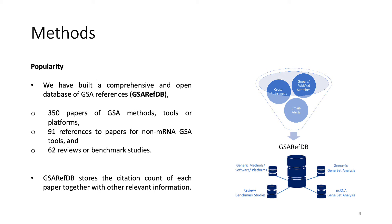For popularity, we have constructed a database of GSA references we call GSA RefDB, which is a compendium of 350 papers of GSA methods, 91 references to papers for non-mRNA GSA tools, and 62 reviews or benchmarking studies. Amongst other information, GSA RefDB also stores citation count of each manuscript, which is the basis of popularity.